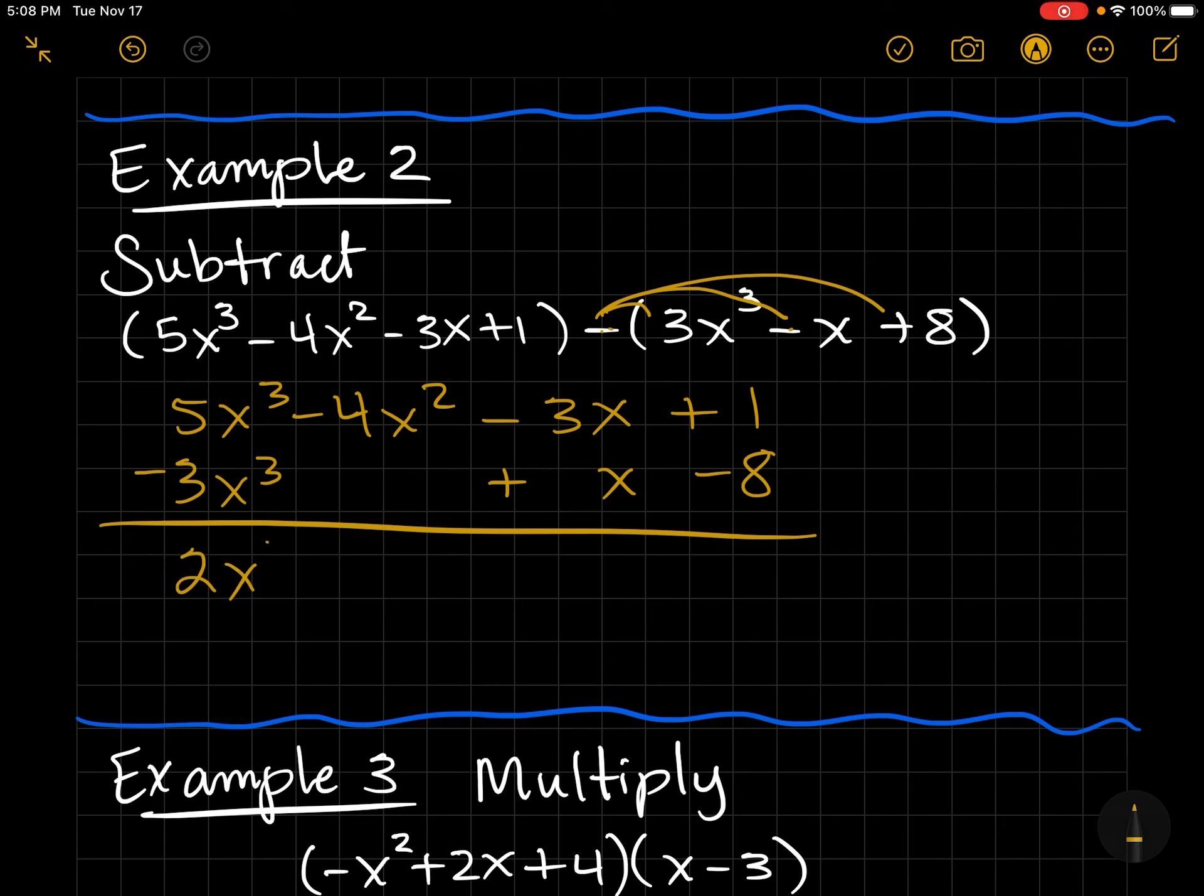So I have 2x³ - 4x² - 2x - 7. Final answer.